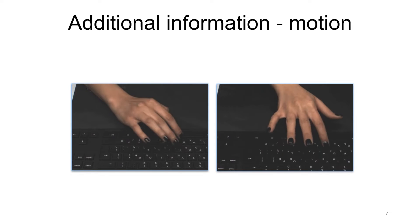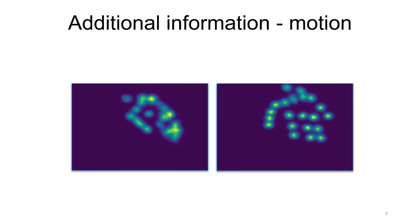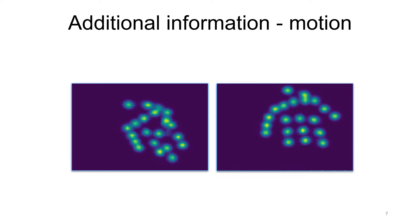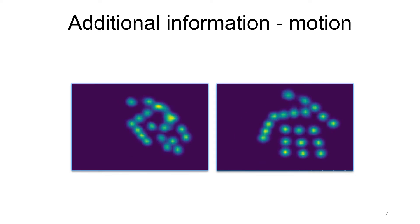However, our model doesn't see the hand as an image, but as a set of joint coordinates through time. Now, it is clear that the typing patterns are completely different.